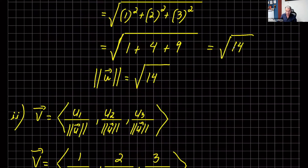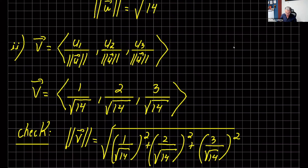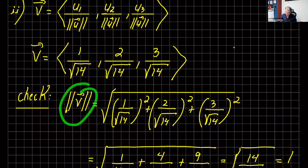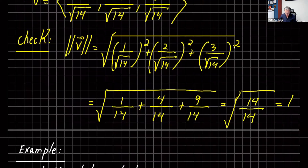For part 2, to find a unit vector in the same direction as u — I'll call it vector v — you take all the components and divide by the norm of u. So v equals 1 over root 14, 2 over root 14, and 3 over root 14. This is normalizing u. Vector v is in the same direction as u, and the norm of v equals (1/√14)² + (2/√14)² + (3/√14)², which equals 1.